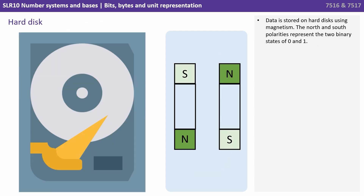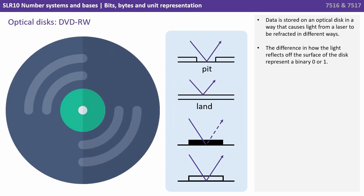Data being stored on hard disks can be done using magnetism. The north and south polarities can be used to represent the two binary states, zero and one. Data is stored on an optical disk in a way that causes light from a laser to be refracted in different ways. The difference in how the light reflects off the surface of the disk can again be used to represent the binary states zero or one.